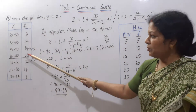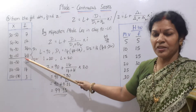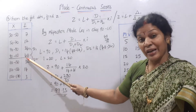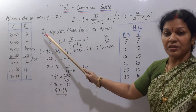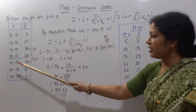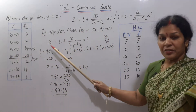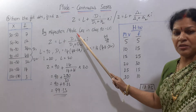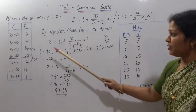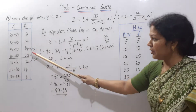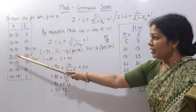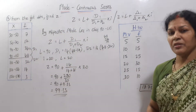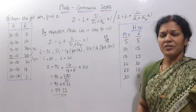To recap: the problem gave us frequencies where 48 is the highest and the next highest is 34. Since there is a large difference, by inspection mode lies in class 90 to 110. We write the formula Z = L + (d1 / (d1 + d2)) × i. With d1 = 48 − 34 = 14, d2 = 48 − 32 = 16, L = 90, and i = 20, we get mode = 99.33.